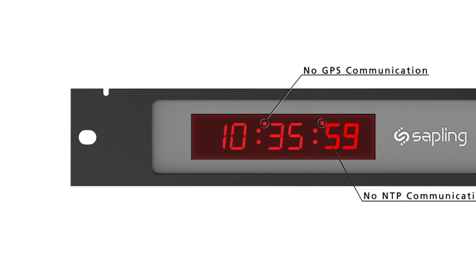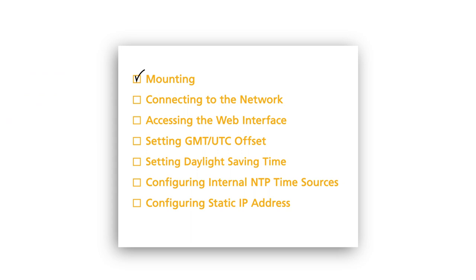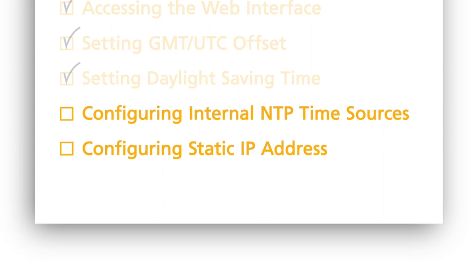This completes the standard mandatory settings that must be set in all Sapling MasterClocks. Depending on your application, you may need to configure additional settings. Two common additional settings are configuring an internal NTP time source and setting your MasterClock to a static IP address.